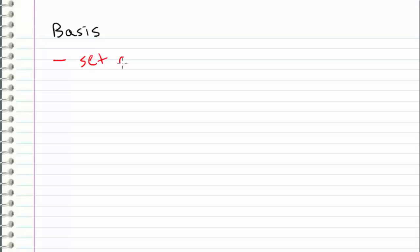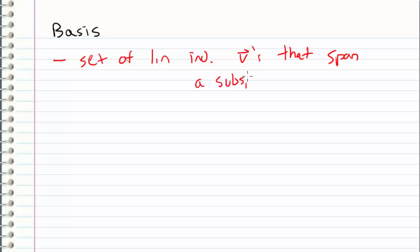In this video I want to introduce the idea of a basis. In the previous several videos we've discussed subspaces — the definition of a subspace, how to tell if something is a subspace, and a couple other related questions. Now I want to get into the actual bones of a subspace, and that's the basis. We can define a basis as a set of linearly independent vectors that span a subspace, or a space in general.